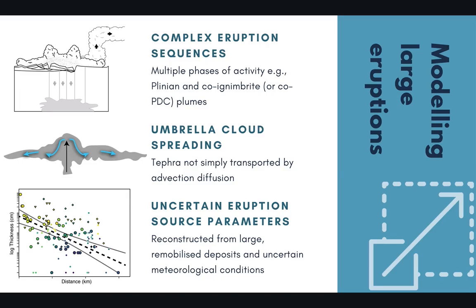Firstly, large eruptions are typically characterised by multiple phases of activity, meaning that using a single set of eruption source parameters is often not appropriate. Secondly, because of the very high mass eruption rates associated with large eruptions, there is significant spreading of ash by gravity currents in the umbrella cloud region. This means that modelling purely advection-diffusion is not appropriate and will likely underestimate the extent of the ash dispersion.